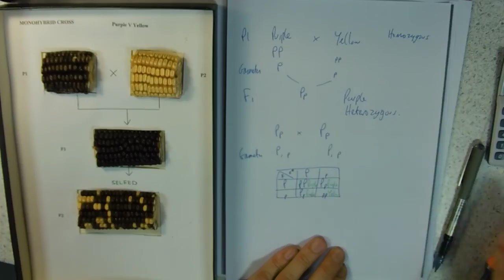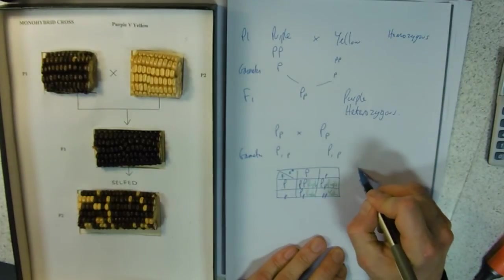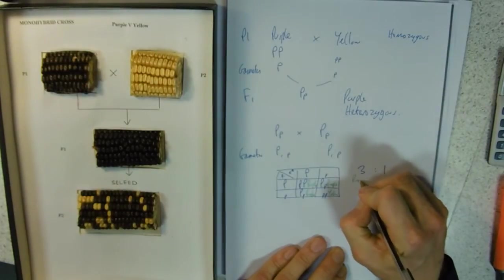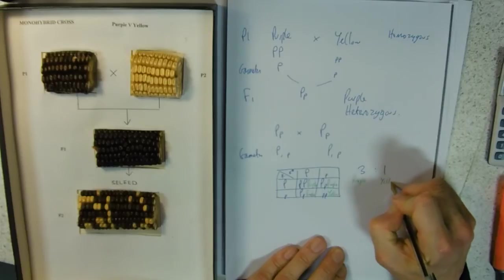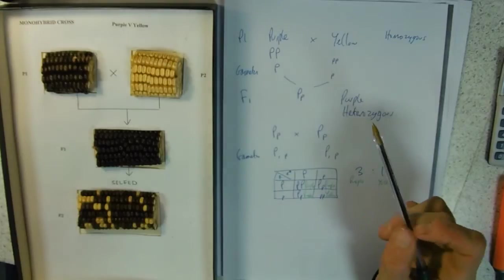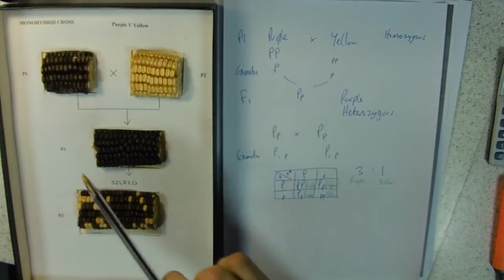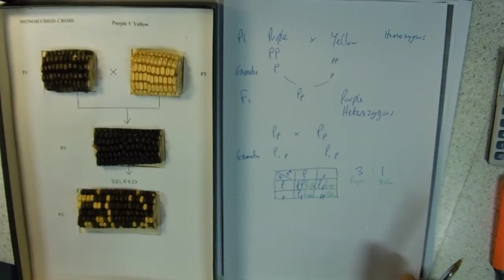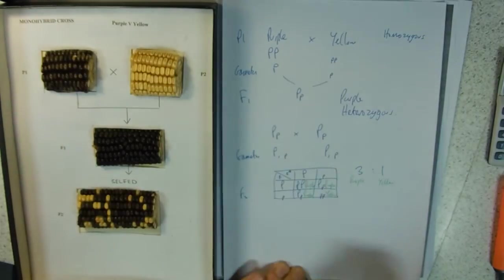So our ratio would be three purples to one yellow. That's our classic Mendelian monohybrid cross. But we've got quite a few plants here, so does this example follow our three to one ratio in our F2, our second filial generation?